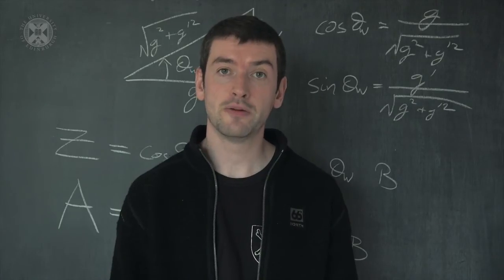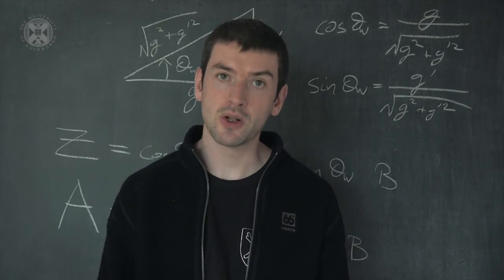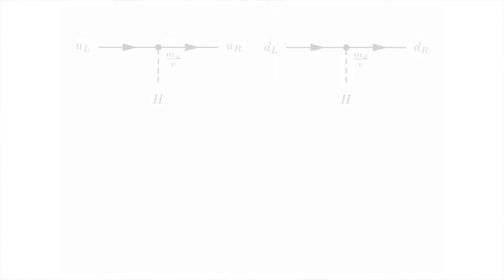It is only after electroweak symmetry breaking that the charges of these particles, their electric charges, are equal. Then they combine and form a massive fermion. This mass also comes about through their interaction with the Higgs boson. So, let's look at how matter interacts with the Higgs boson. Here we see the interaction of up quarks and down quarks with the Higgs. The strength of the coupling is proportional to the mass of the up quark divided by the vacuum expectation value of the Higgs. Notice that in this interaction, the left-handed up changes into a right-handed up. Similarly, the down quark interaction strength with the Higgs boson is proportional to the mass of the down quark, and the left-handed down quark changes into a right-handed down quark during the interaction with the Higgs boson.